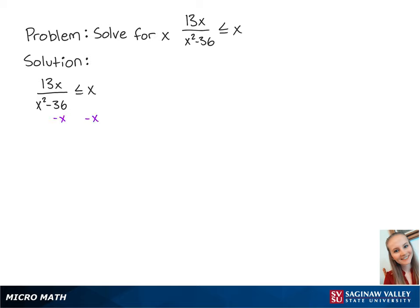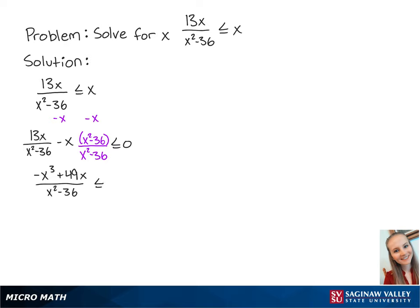We're going to subtract x from both sides so that we have 13x over x squared minus 36 minus x is less than or equal to 0. Next, we want to subtract the numbers on the left side using a common denominator of x squared minus 36. Simplifying the left side gets us negative x cubed plus 49x over x squared minus 36 is less than or equal to 0.